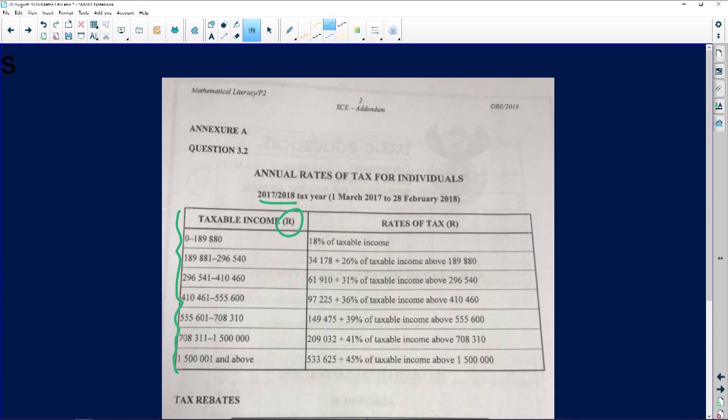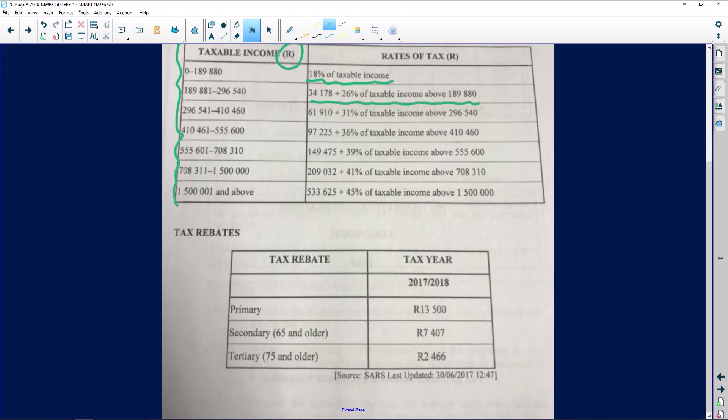Anything between zero rand and R189,880 is going to be 18% taxable income. If it's anything between the next brackets, and so on, you would use the formula that you have been given. Let's go see the rebates in this particular case.